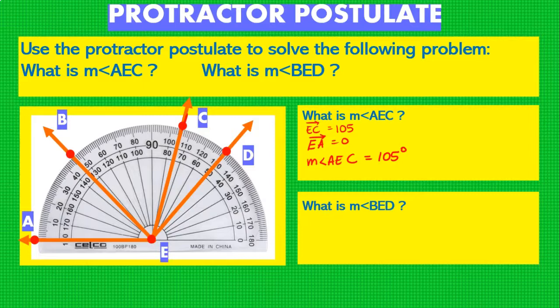Now what is the measurement of BED? Now in the case of BED we're not starting at 0, so we cannot do the subtraction by 0 again, but there's something that we can do. We can assign EB, the ray EB, with a real number as well. So EB can be assigned with a value of approximately 46 right, because it's a little bit after the 45 line. So EB, the ray EB, is 46. Now we know that the measurement of angle EB is also going to be of 46 degrees, because when you subtract 46 minus the ray EA which is 0 degrees, that is going to give you 46 correct?